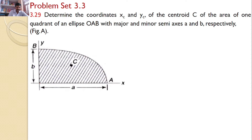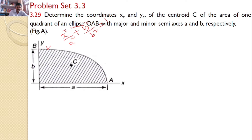Our interest is to find the centroid for this one quadrant of an ellipse. The given curve is clearly an ellipse, with major axis A and minor axis B. We know the ellipse equation: X² / A² + Y² / B² = 1. With this basic knowledge, let us proceed to find the centroid C.